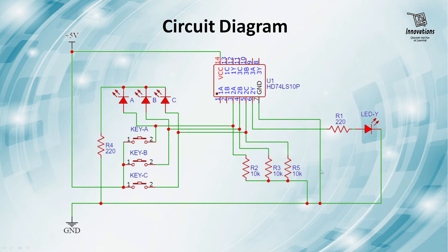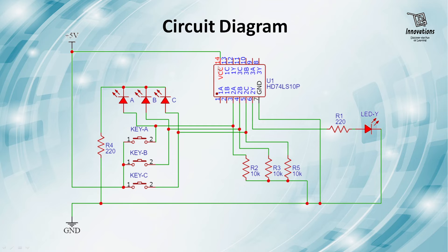The pull-down resistors are used because when the switch is not pressed, there is no input at the input pin, so the output may fluctuate. To keep those pins grounded at that time, we have used these 10k resistors. The output pin number 6 is connected to another LED via a current limiting resistor. This LED will glow when the output is high and will not glow when the output is low. Pin number 7 is connected to the negative power supply and pin number 14 is connected to the positive power supply.